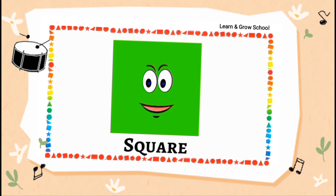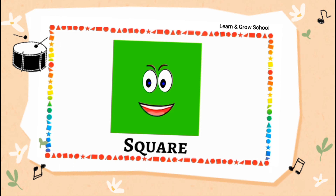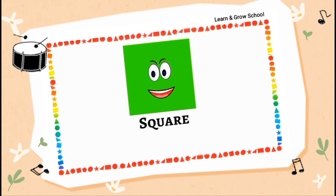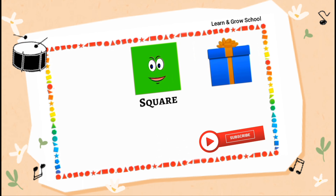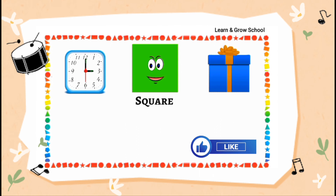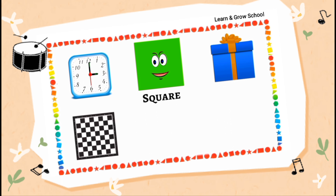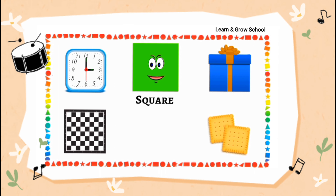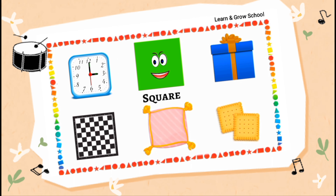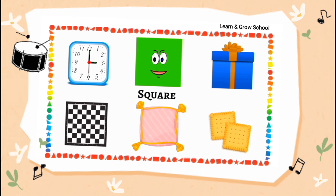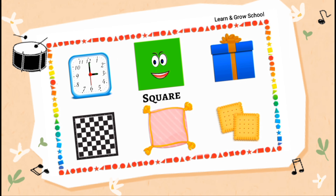My four sides and four corners make me a square. You can find me anywhere around your surroundings. For example, you can wrap me as a gift box. You can watch me as a wall clock. You can play on me as a chess board. You can eat me as a cookie. You can rest on me as a pillow. All these objects can be seen in the shape of a square.